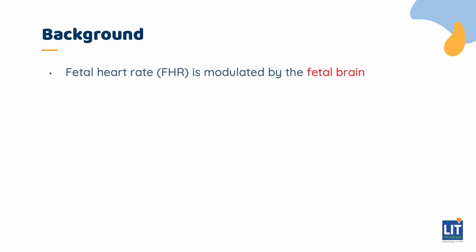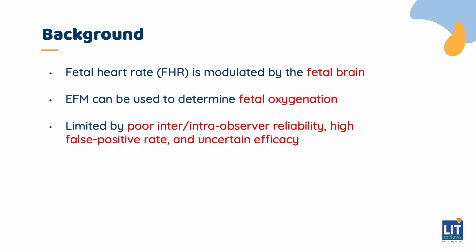The cardiotocogram consists of both the tocogram, which monitors maternal contractions, and the cardiogram, which measures fetal heart rate. The fetal heart rate is determined as a balance of the parasympathetic and sympathetic tones. EFM can be used to determine fetal oxygenation. Please remember the classification of fetal heart rate tracing is dynamic — the classification can change depending on the clinical scenario and management.